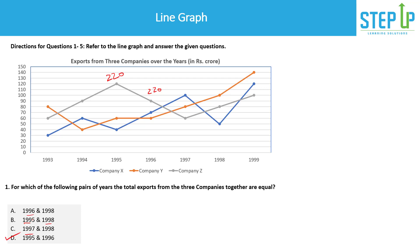We can also verify 1997 and 1998. For 1997: 60 plus 80 plus 100 equals 240. For 1998: 50 plus 80 plus 100 equals 230. So 1997 and 1998 are not equal to each other. Clearly the pair 1995 and 1996 is the correct answer — both total 220 crores. The answer is the fourth option.